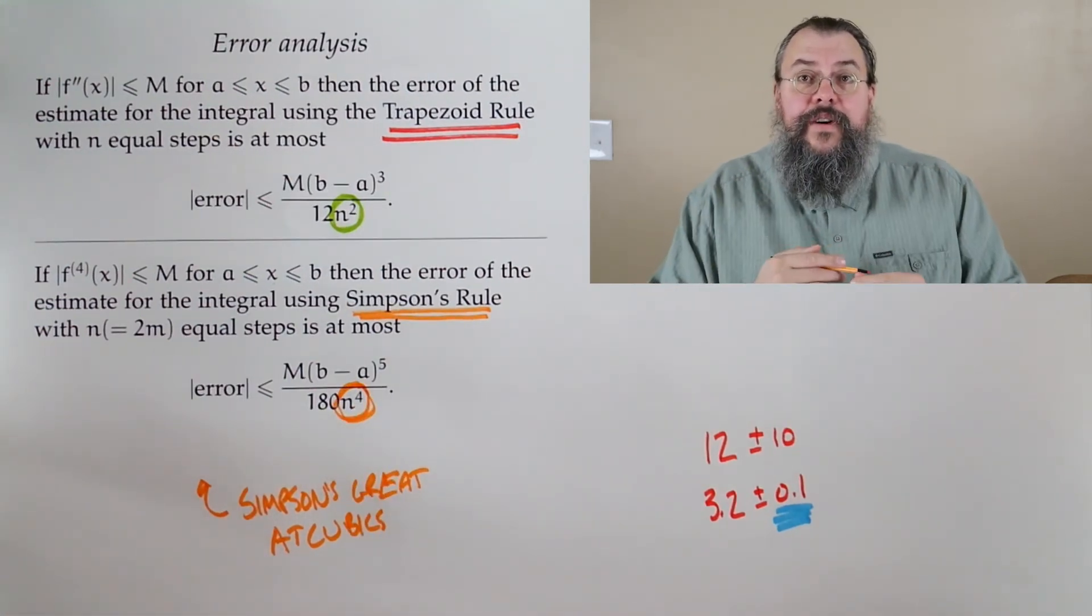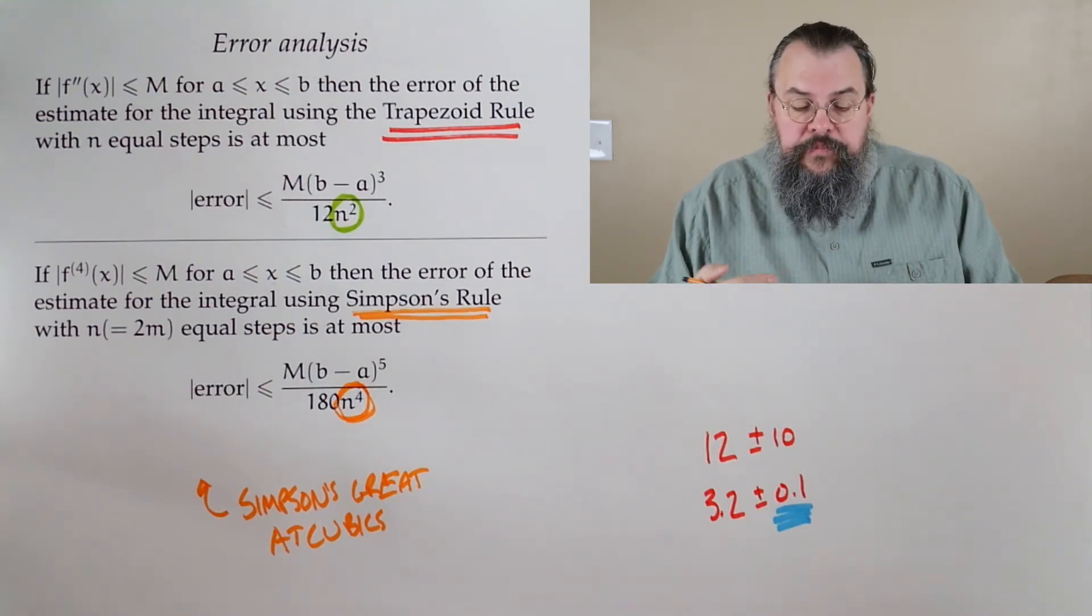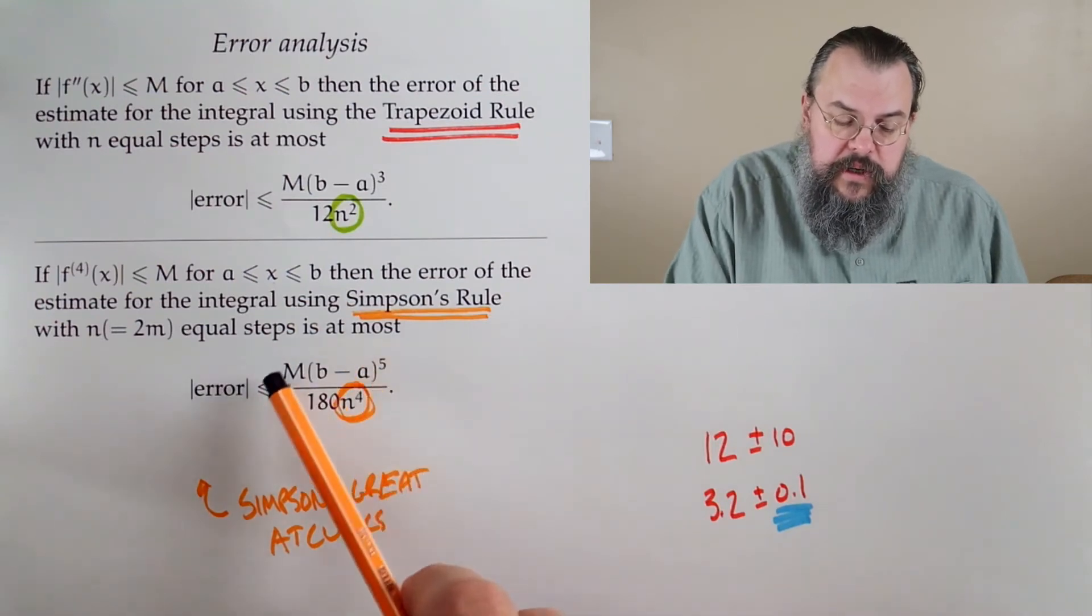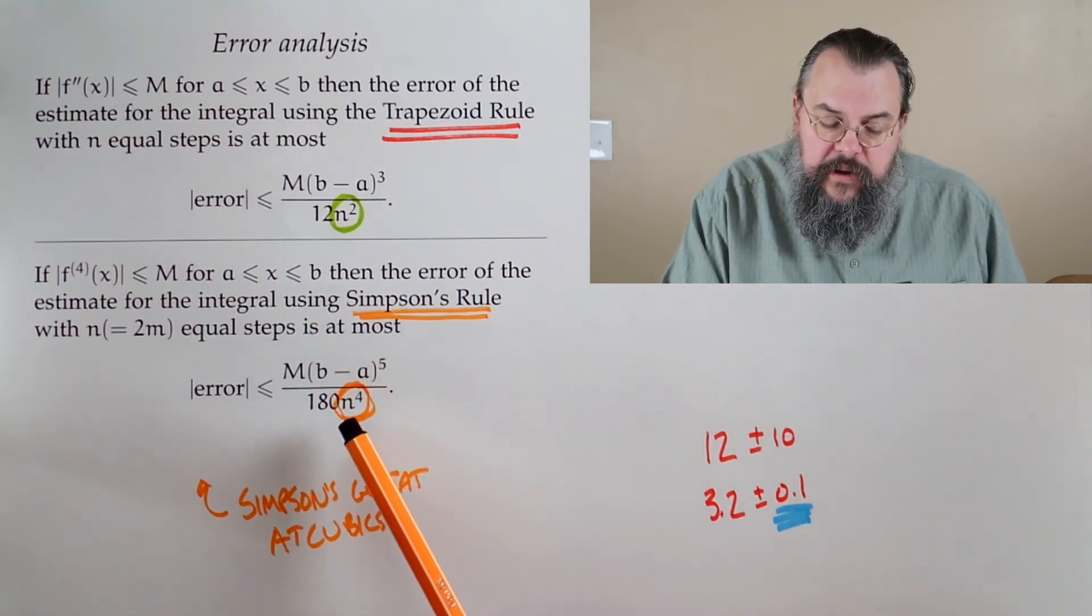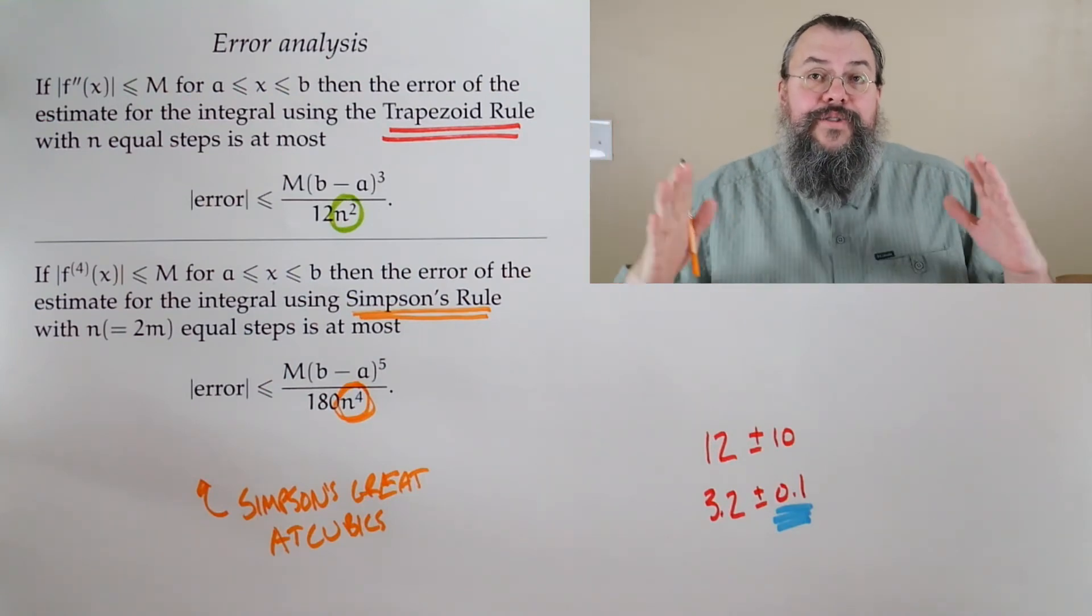Same philosophies, right? If we know our M, which we can find, we know b and a, and therefore we can say, look, we know all these pieces other than n. And now, as n goes up, our error goes down.